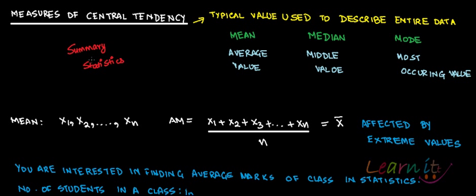So there are three major measures of central tendency. One is mean — mean is the average value. Then you have median — median is the middle value of the data. And then mode — mode is the most occurring value in the entire data set.